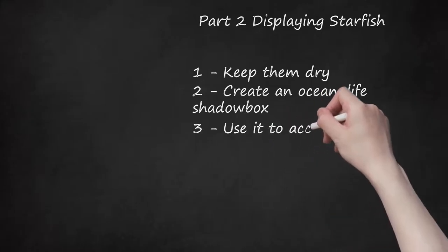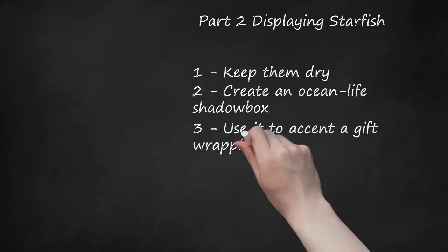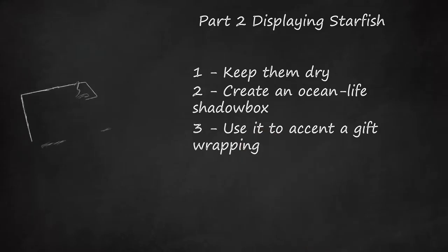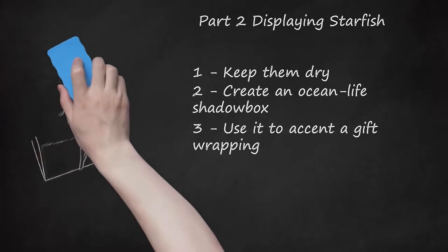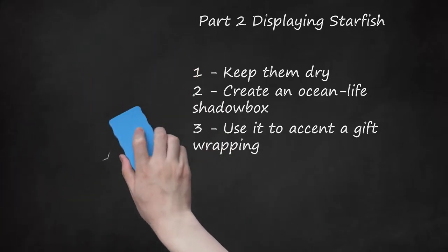Step 3: Use It to Accent a Gift Wrapping. Instead of a bow, use a starfish. Gluing a preserved starfish can be a cool way to highlight your gift wrapping. You could also hang it with ribbon from a gift bag to liven up the package. Pair it with an ocean-themed present for an added touch.